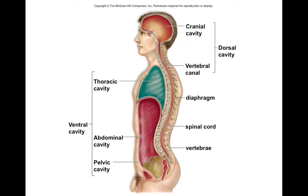Chapter 11 also covers the different cavities in the body. You have the dorsal cavity and the ventral cavity. The dorsal cavity involves your brain and spinal cord. The ventral cavity involves your thoracic, abdominal, and pelvic cavities.